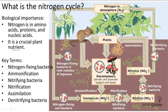This completes the nitrogen cycle. A really quick summary: nitrogen goes from N2 through nitrogen-fixing bacteria into NH4+, through nitrifying bacteria into NO2-, again through nitrifying bacteria into NO3-, and then back through denitrifying bacteria into N2.